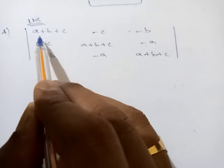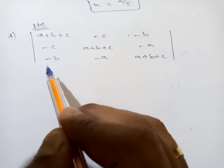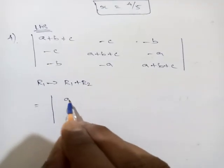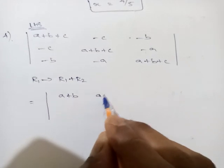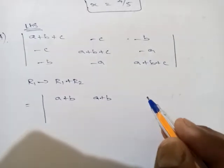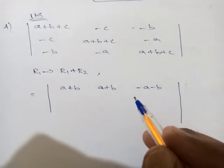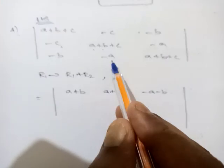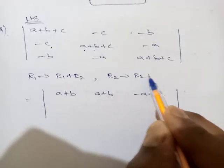To get a+b, apply r1 → r1 + r2. Here a+b+c plus (−c) gives a+b; the c cancels. Here also a+b. Here −a + (−b) = −a−b. To get b+c, apply r2 → r2 + r3: a+b+c + (−a) gives b+c; a cancels. Here also b+c. Here −b−c.